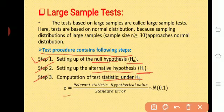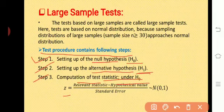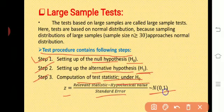Step 3 is computation of the test statistic under H0. Here the test statistic is denoted by Z, and it is nothing but the relevant statistic minus the hypothetical value, divided by the standard error. This always follows Normal(0,1), that is a standard normal distribution, which you are going to study in the fifth unit on theoretical distributions.